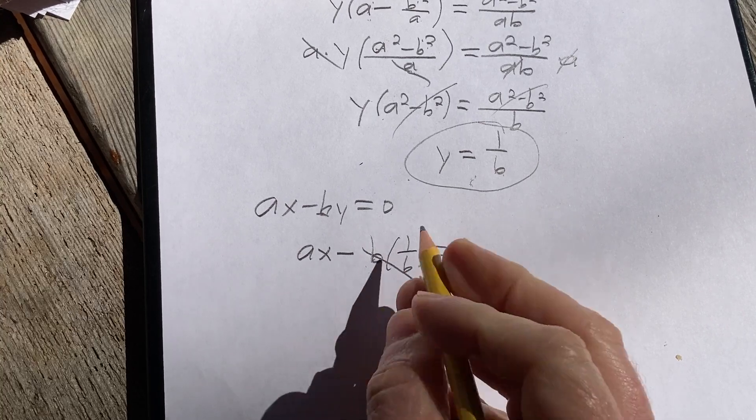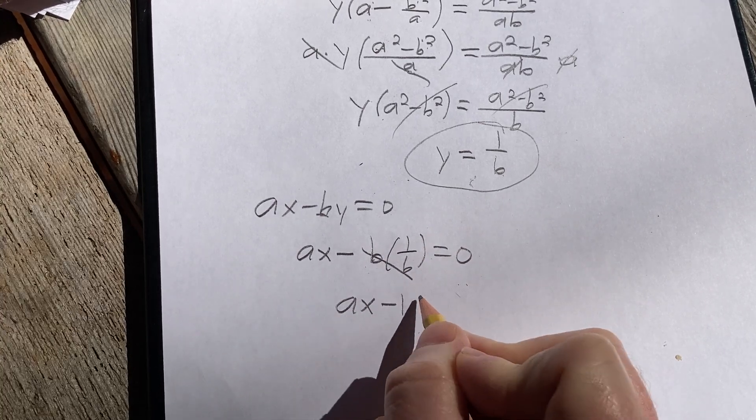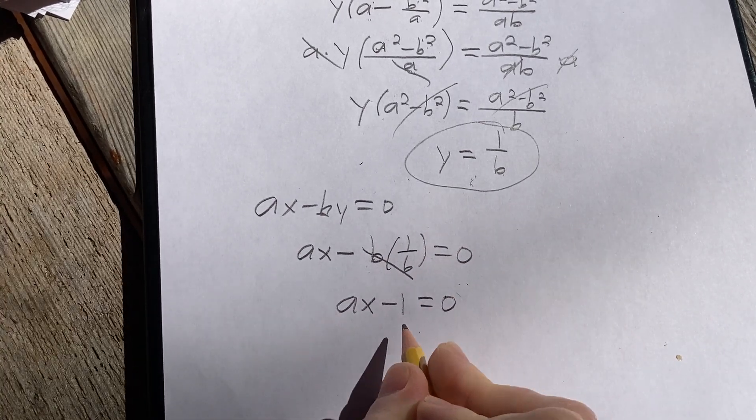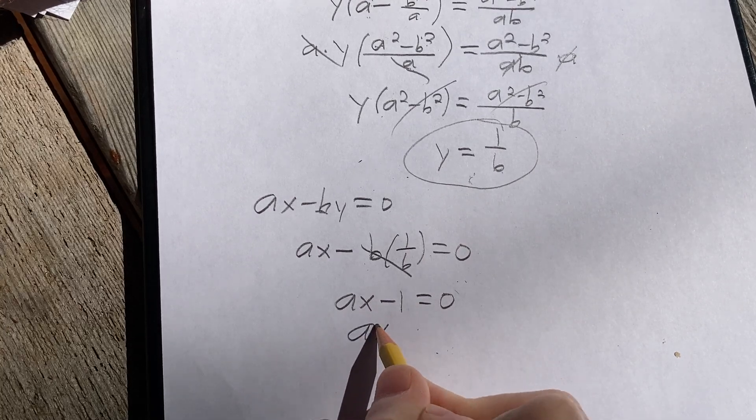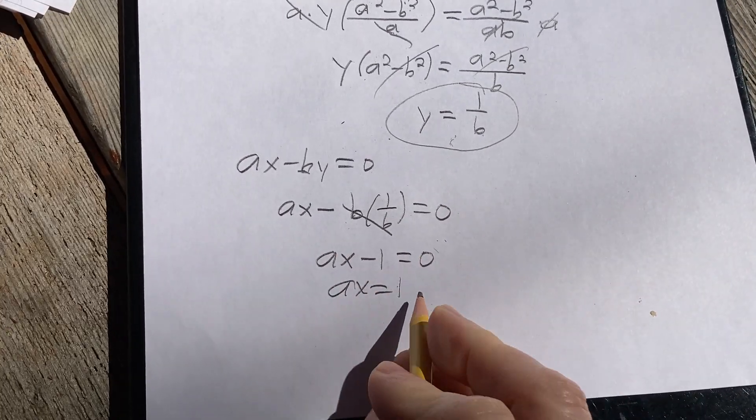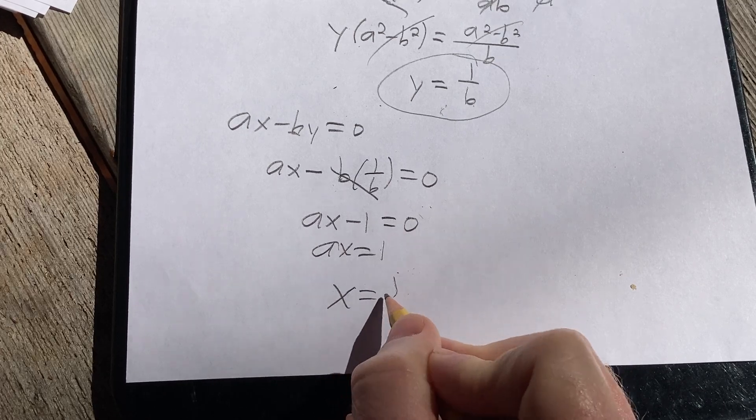And that's equal to zero. Now this is really nice. These cancel. So we get ax minus one equals zero. Add the one to both sides. We get ax equals one. Divide by a, which of course is not zero. So x is equal to one over a.